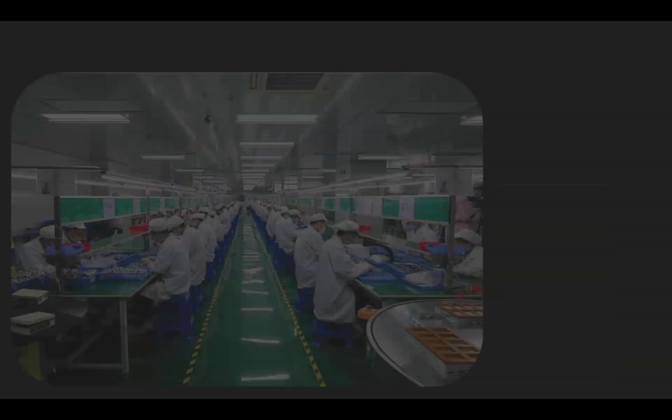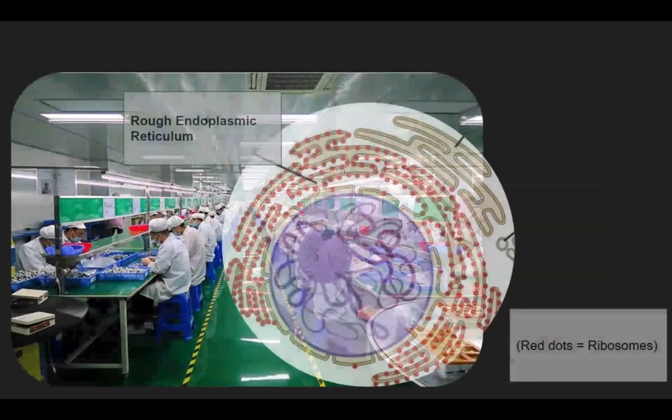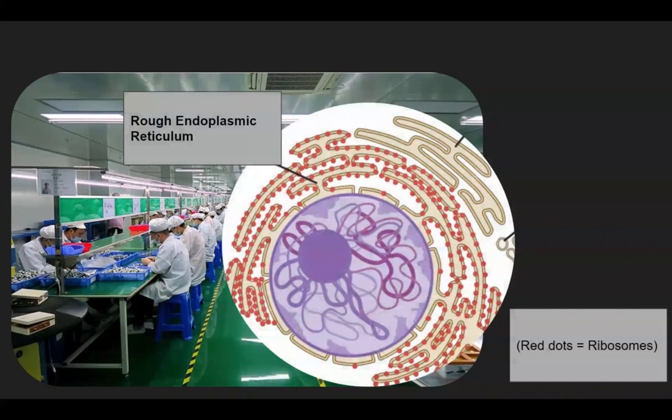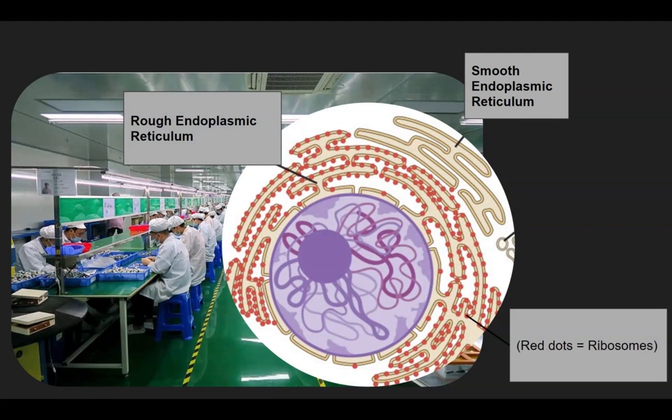What's the factory where the workers come from? It's the rough endoplasmic reticulum. Like its smooth little brother, it can store proteins and send them around the cell when the cell has needs.